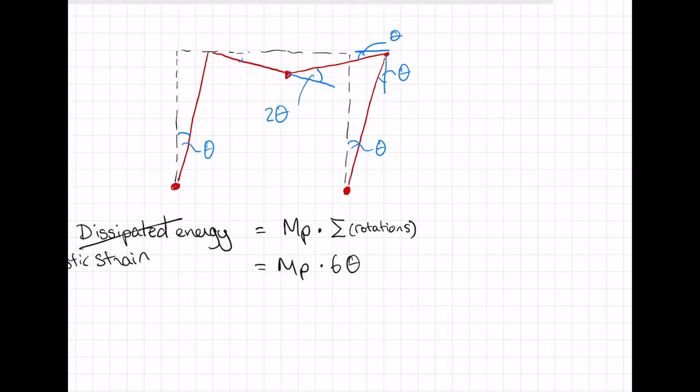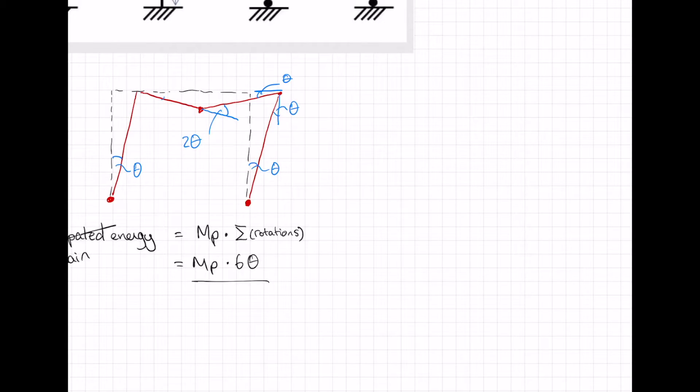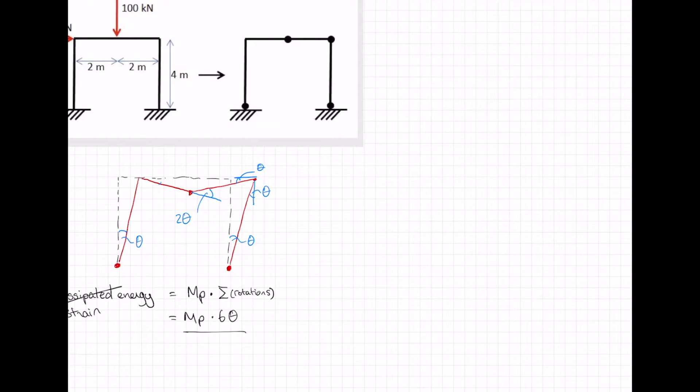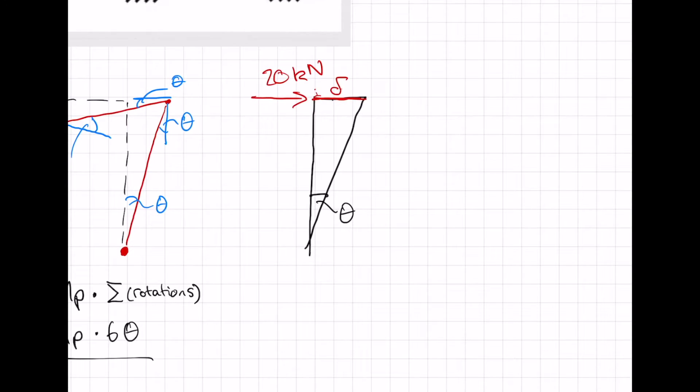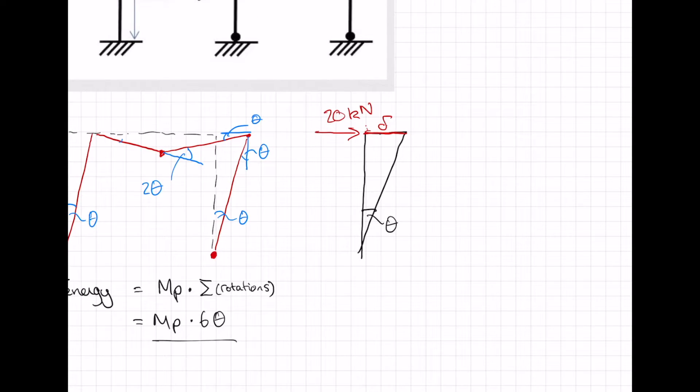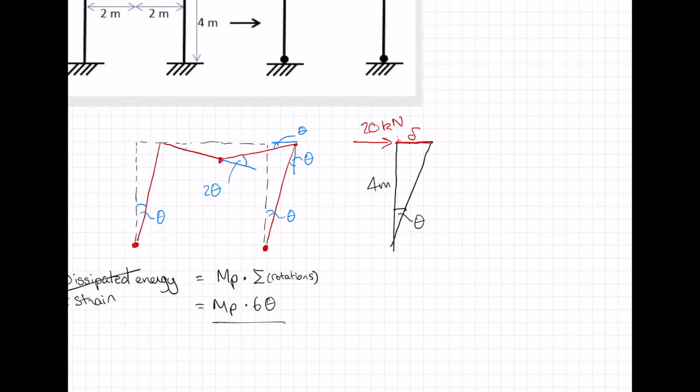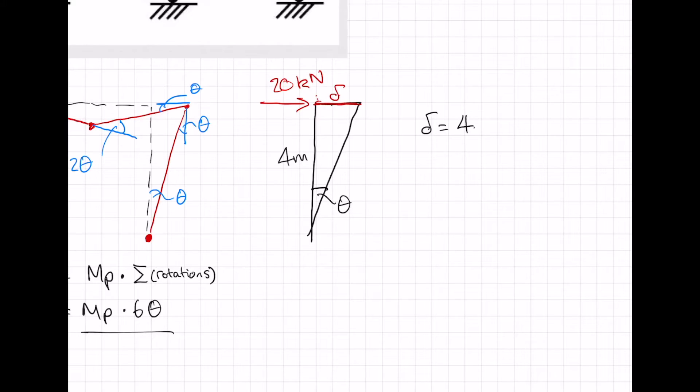That is our energy within the joints. Now we need the work done. The work done is 20 kilonewtons and it's displaced this distance here. I've exaggerated this quite heavily because in reality, that theta there is going to be a very small angle because we're talking about the onset of collapse.